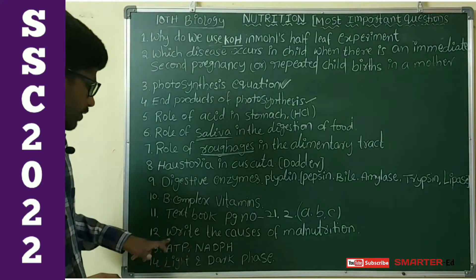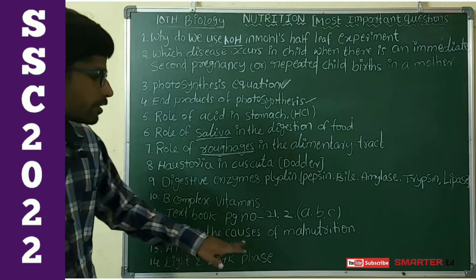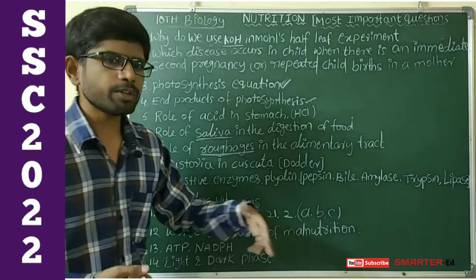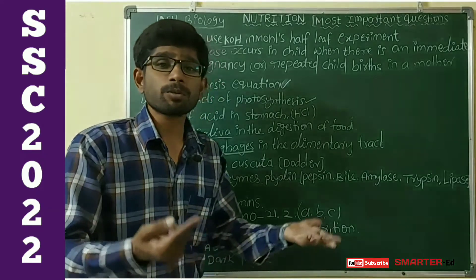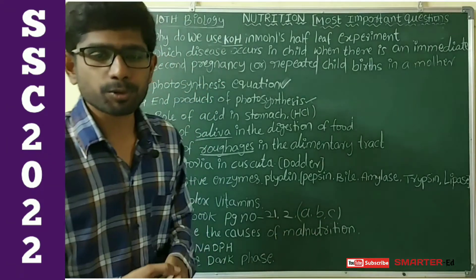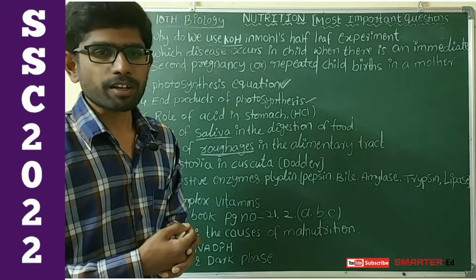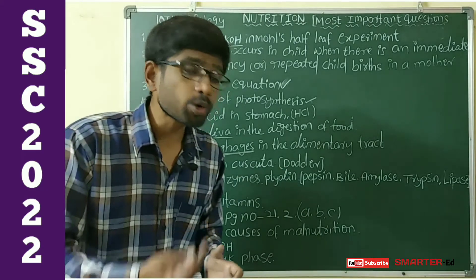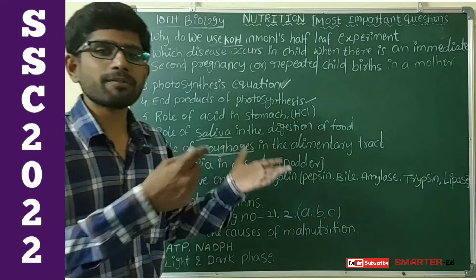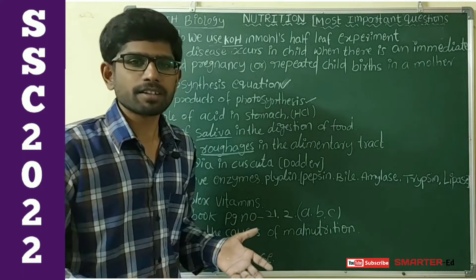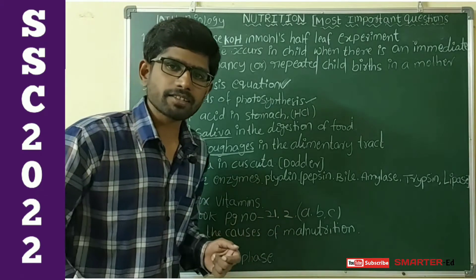Next, write the causes of malnutrition. The main causes include poor quality of food and socio-economic factors. We need to give these types of points as answers.